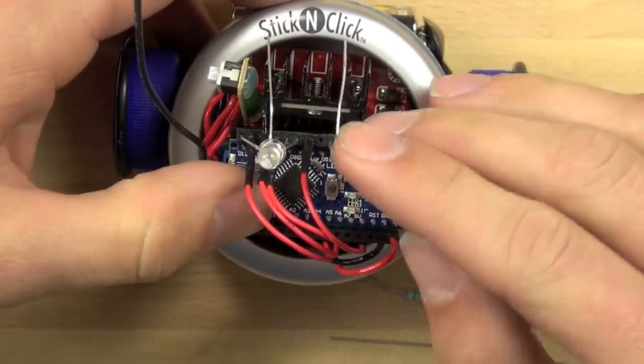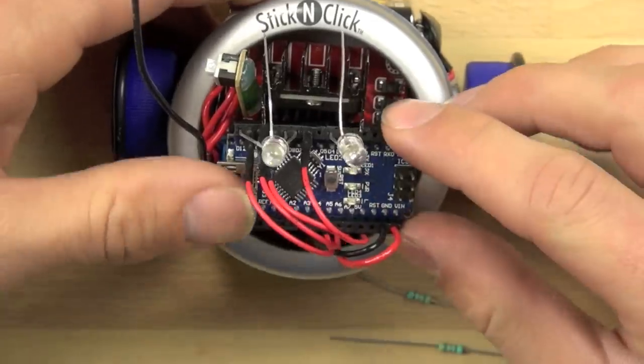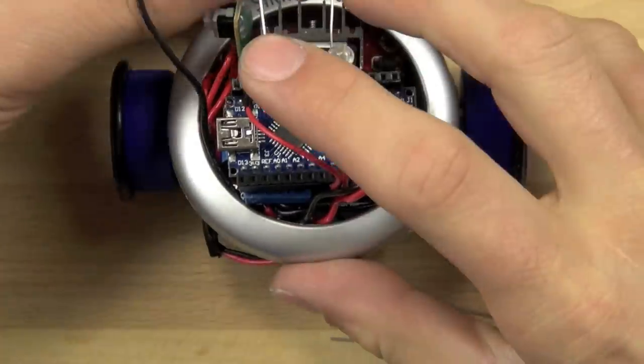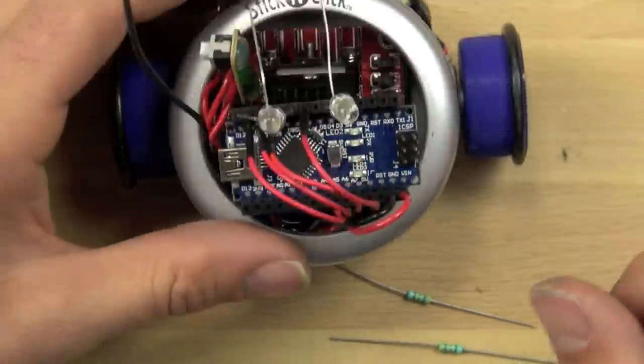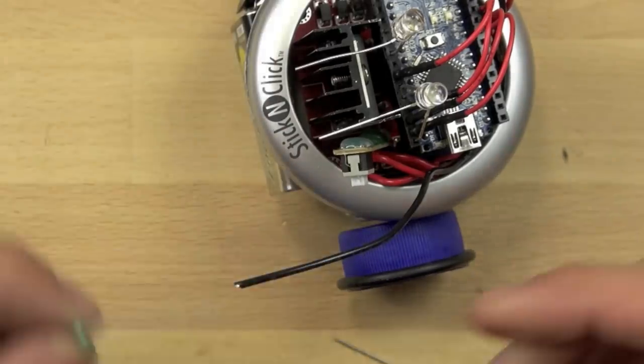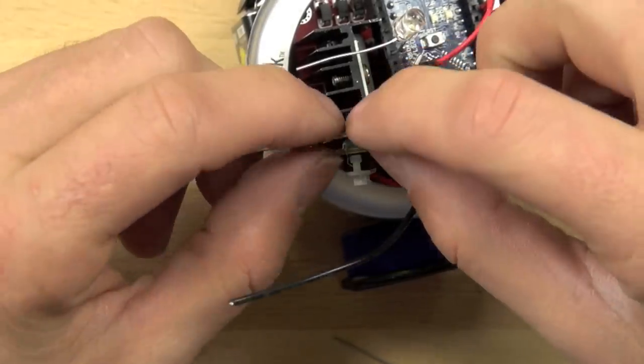So once we've got the LED in place for those, we can take our resistors and we can connect those resistors to our LEDs. Now the legs that we bent back are the negatives.